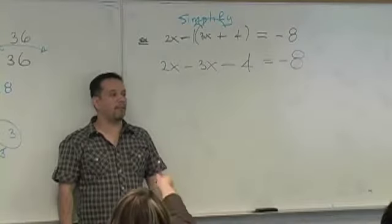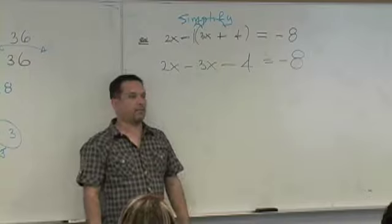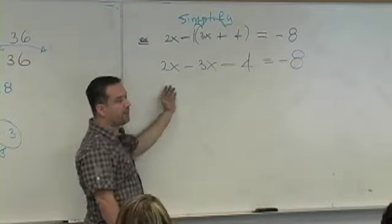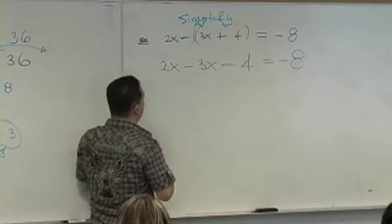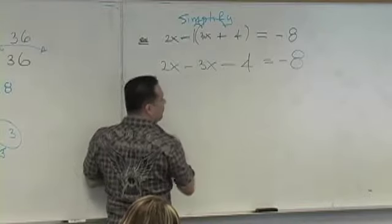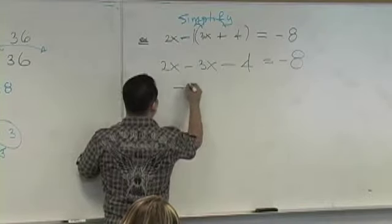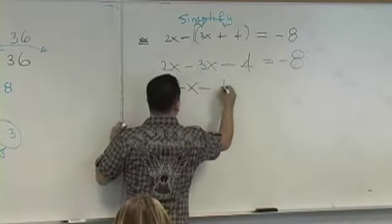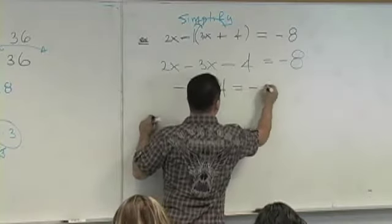What do you do now? Combine like terms. Can you combine like terms? 2 apples minus 3 apples? You owe an apple again. Minus 4 equals negative 8.